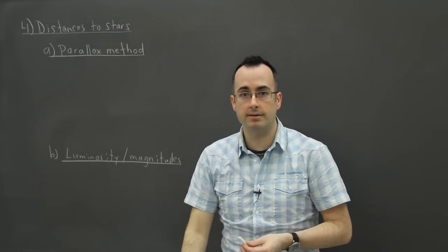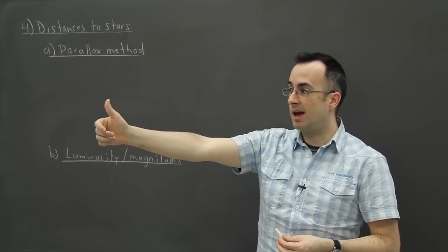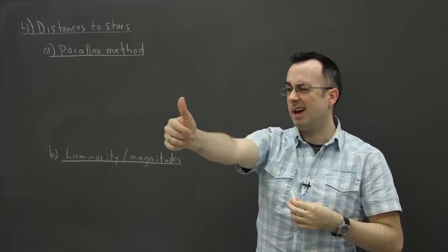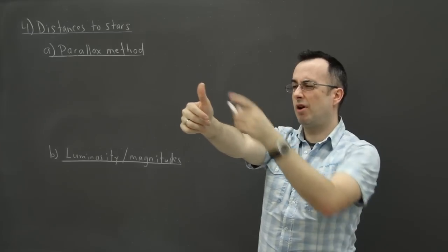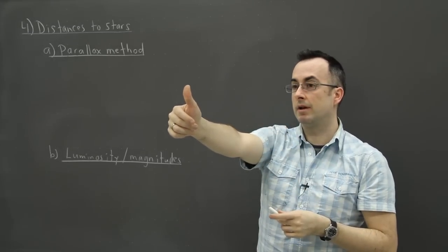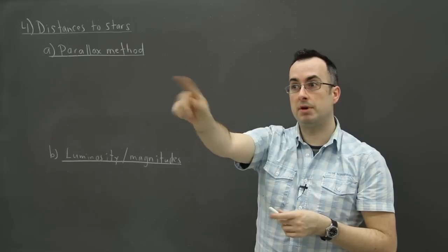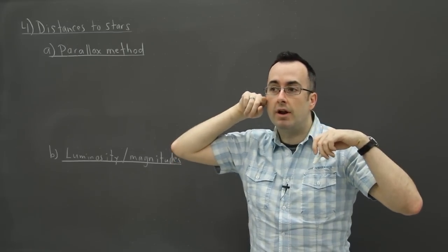You can see parallax in action anytime as long as you have two working eyes and a thumb or finger. Just hold out your thumb and use only one eye. I'm closing my left eye, and my thumb is lined up with something in the background. Now change which eye is open, and you're going to see that your thumb appears to have jumped.